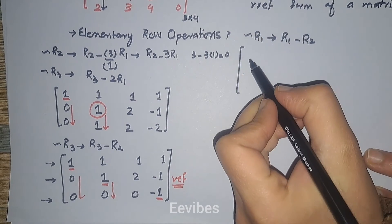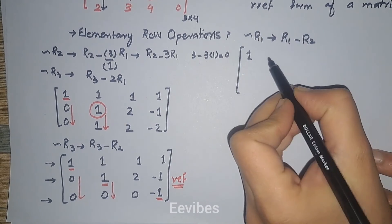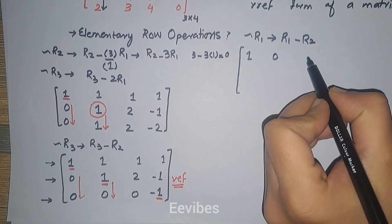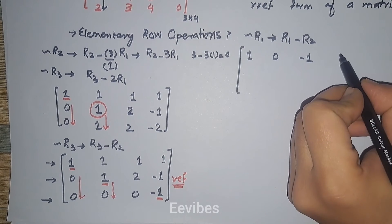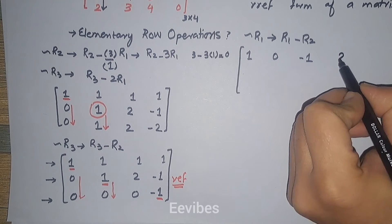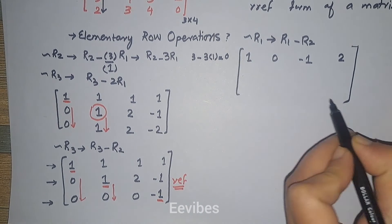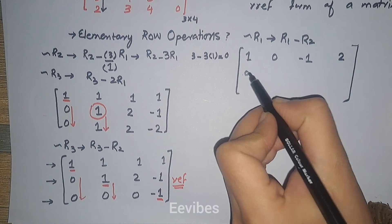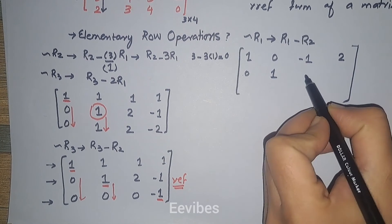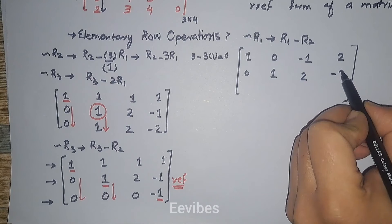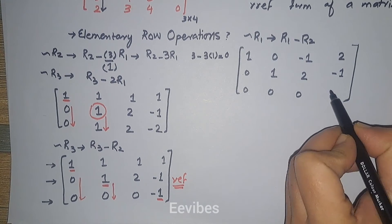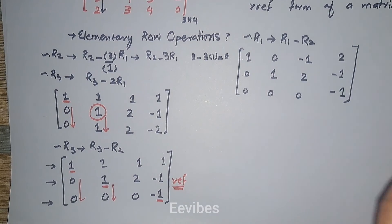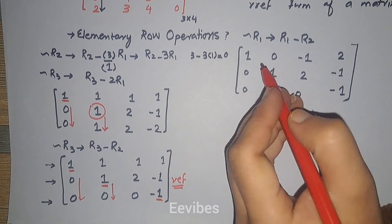Performing R1 minus R2: one minus zero is one, one minus one is zero, one minus two is minus one, and one minus minus one becomes one plus one which equals two. The rows are now: modified R1, then zero, one, two, minus one, and then zero, zero, zero, minus one.